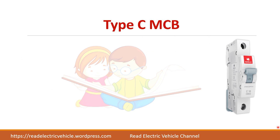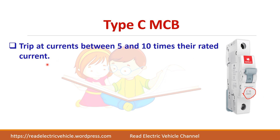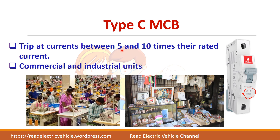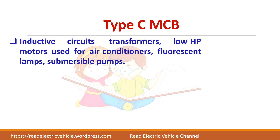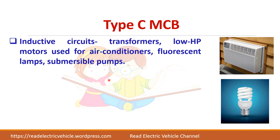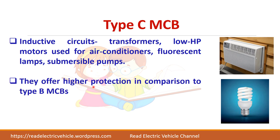Next we have type C MCB, denoted C16. The breaker trips at current between 5 to 10 times the rated current. It is normally preferred for small commercial and industrial units, especially where you have more inductive loads like transformers, air conditioners, and fluorescent lamps — though it can also be used at home. Type C MCBs offer higher protection compared to type B MCBs.